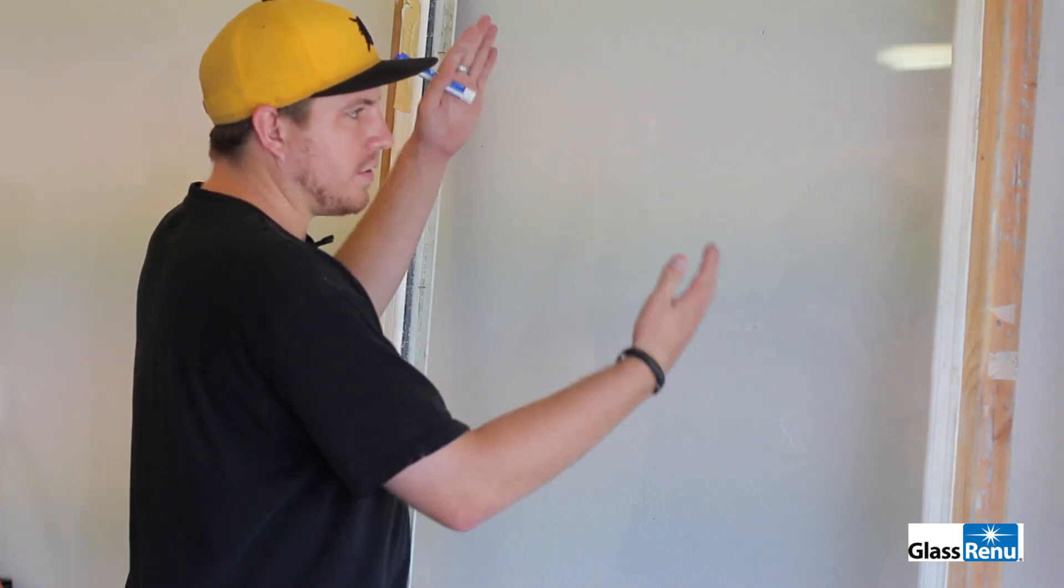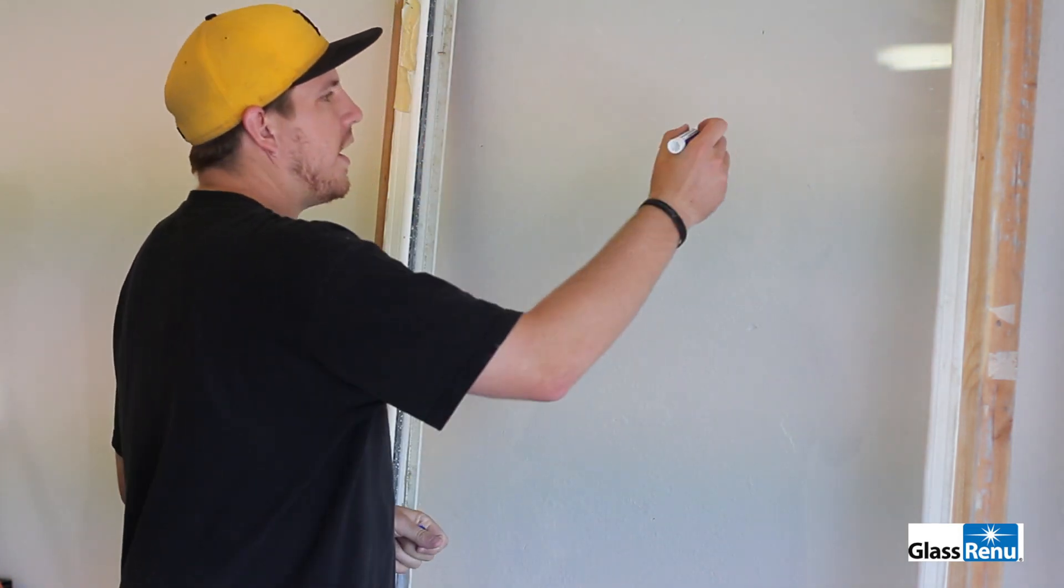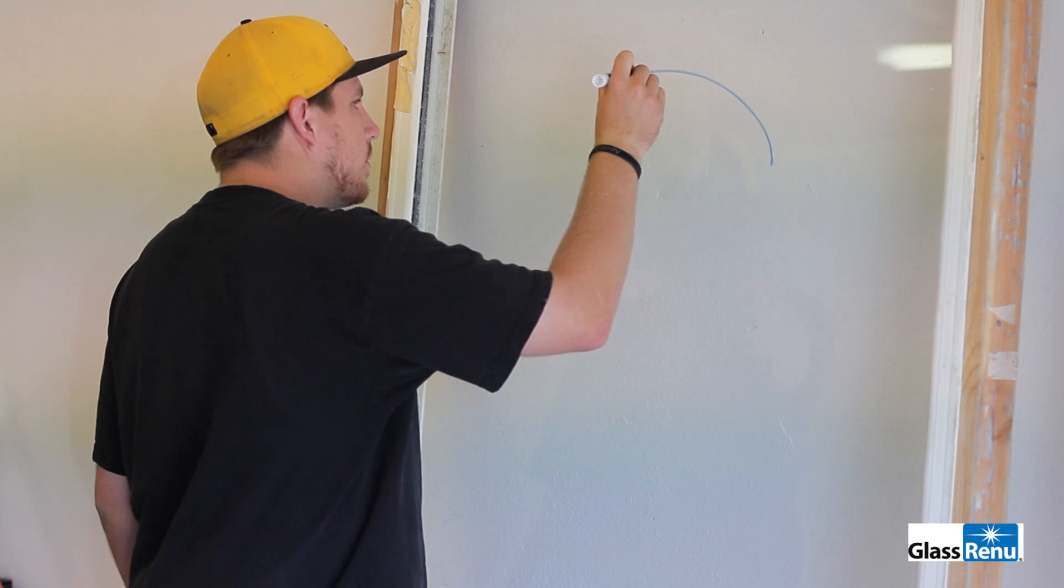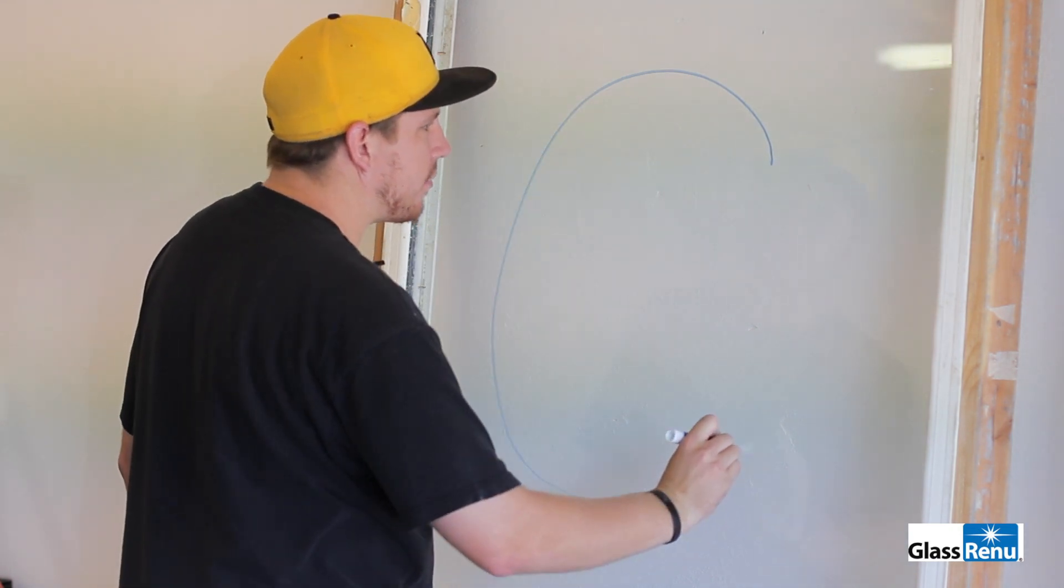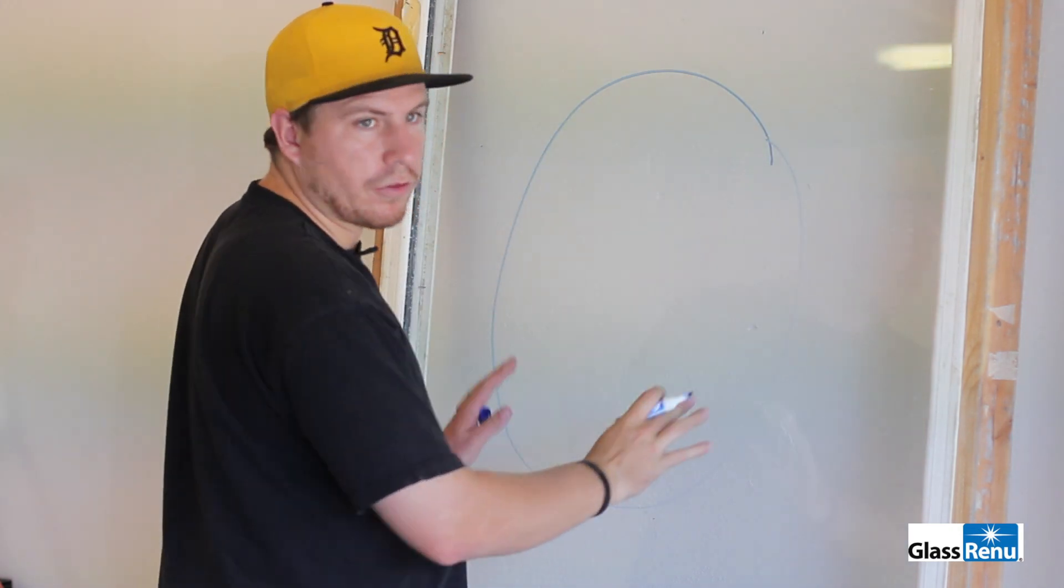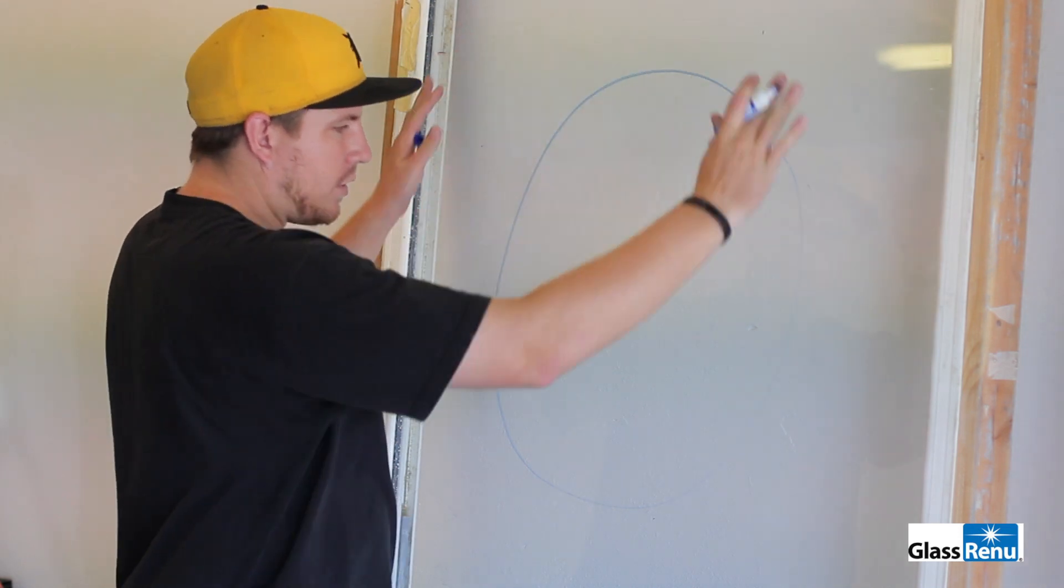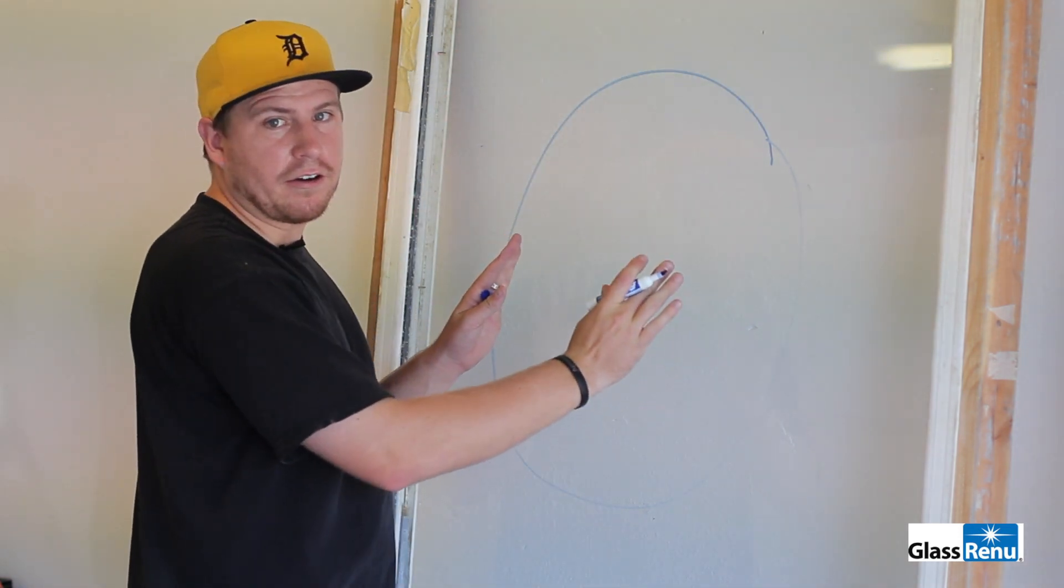If I'm working on a window, say this is the size window that we're working on, and my hazed area, the total area that I've ground covers this whole thing. So I'm not going to be polishing the whole piece of glass. I'm just going to polish the haze area.